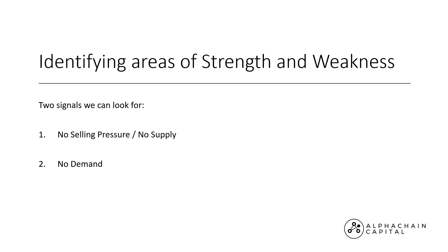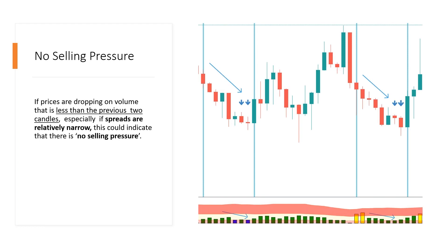We can also use VSA to determine whether the market is becoming weak or if there might be a sign of strength appearing, by looking for two signals: no supply or no selling pressure, and no demand or no buying pressure. These could help us potentially with confirmations or trade setups, particularly around areas of support or resistance. Using VSA, we can try to recognise where selling pressure becomes exhausted at the bottom of moves to identify when an uptrend may occur. We can see these areas emerge in down bars or down moves — if prices are dropping on volume that is less than the previous two candles, especially if the spreads are relatively narrow, this could indicate that there is no selling pressure.